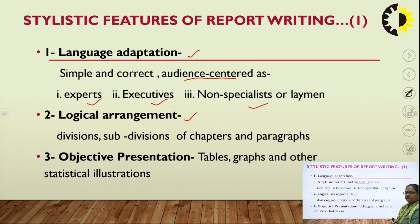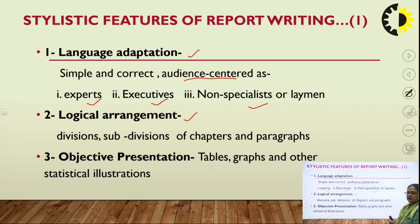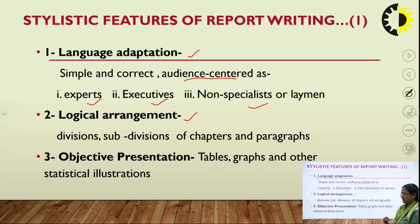Next is logical arrangement. Whatever facts and information we have gathered, we should arrange it scientifically — after scientific analysis, the information should be arranged and divided. Divisions should be made according to the category of information, with various points of view considered. Whatever information we collect, we have to make proper divisions, subdivisions of the chapters and paragraphs. Things should be logically connected in chapters, subdivisions of chapters, and paragraphs. This is called logical arrangement.